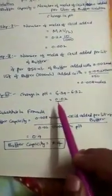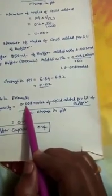So we got both numerator and denominator. Let us substitute in the formula. Buffer capacity is equal to 0.008 moles of acid added per liter of buffer caused a change in 0.02 pH. So simplification will get 0.4, that means buffer capacity is equal to 0.4.